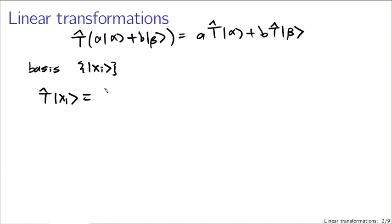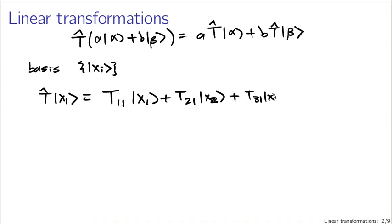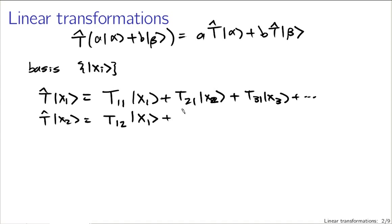So x sub 1 will be transformed into some linear combination: t_{11} times x_1, plus t_{21} times x_2, plus t_{31} times x_3, and so on up to x_n. Similarly, if I have x sub 2, I get an analogous expression: the t_{12} number is the x_1 component, plus t_{22} x_2, plus t_{32} x_3, and so on.